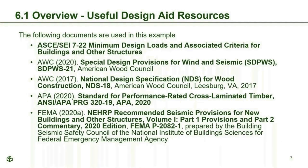Key resources include ASCE 7-22, which provides seismic design criteria and coefficients R, Cd, and Omega for the CLT shear wall system; Special Design Provisions for Wind and Seismic (SPIDWIS), which provides requirements for CLT shear wall design including angle connectors at top and bottom and connectors at adjoining vertical panel edges; the National Design Specification for Wood Construction 2018; PRG 320, the CLT product standard; and the 2020 NEHRP Provisions, which contain similar design requirements and the same seismic coefficients as ASCE 7-22.